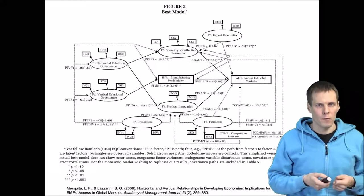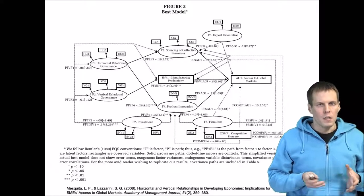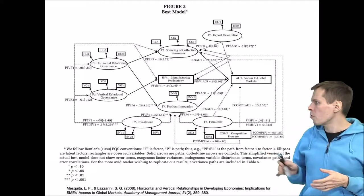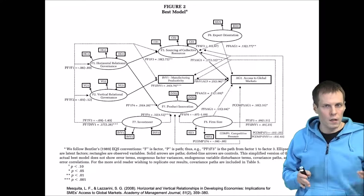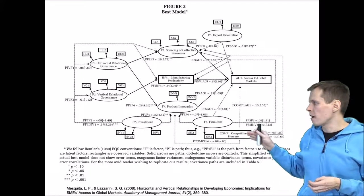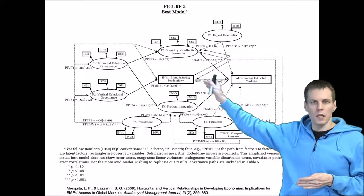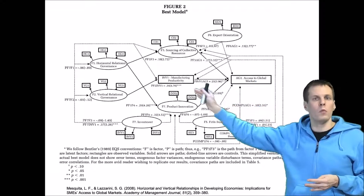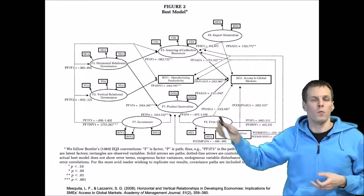Let's take a look at this example from Mesquite and Lazarini. They estimate a fairly complex model with 10 theoretical variables. Some of the variables they have are directly observed boxes. I will use single indicator factors for them.